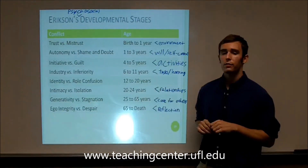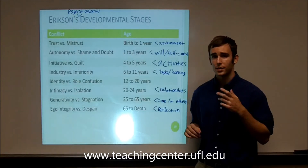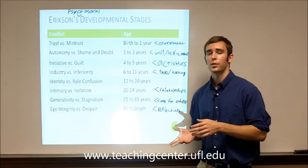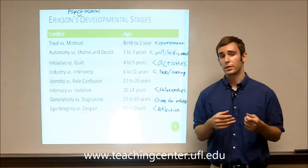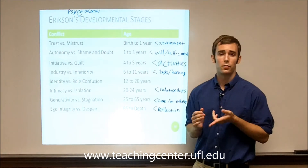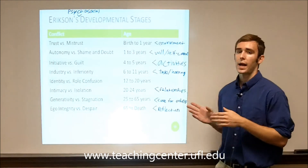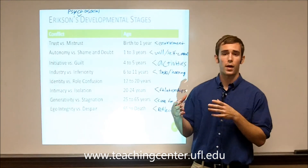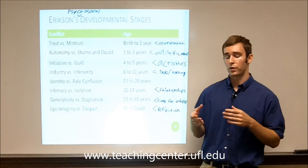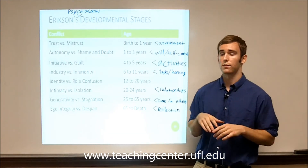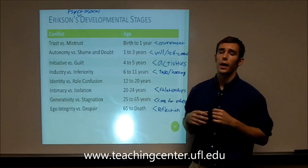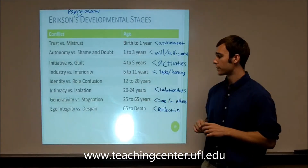The seventh stage, generativity versus stagnation — I like to think of 'generation.' Is the person going back and helping other generations, their children, other people around them? Or are they stagnating and being by themselves, more selfish, focused on their own wants and needs versus the needs of others? This stage really deals with how the individual cares for others.